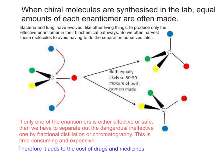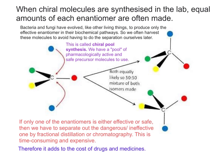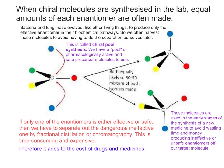And as such, it adds to the cost of drugs and medicines. Bacteria and fungi, like many other living things, have evolved over the years to produce only the effective enantiomer in their biochemical pathways. So what we've started to do is to harvest these molecules from bacteria and fungal cultures to avoid having to do the separation of cells later. This technique is called chiral pool synthesis. At the moment we have a pool of pharmacologically active and safe precursor molecules to use. If we use these molecules early enough in the stages of the synthesis of a new medicine, we avoid wasting time and money producing ineffective or unsafe enantiomers of our target molecule.